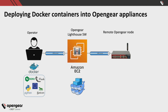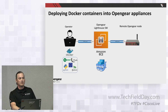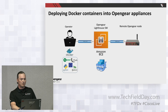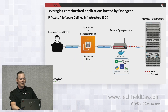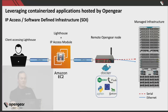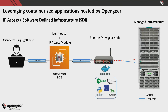We've done demos in the past showing how you can deploy apps from Lighthouse. Today I'm using our IP access solution that's part of Lighthouse to remote in. My Lighthouse is hosted on AWS, so I create a VPN tunnel to AWS into Lighthouse, which can then access the remote node actually in Florida. The app is hosted on an OM down in Florida, and for this demo I have a Cisco router and a Cisco switch hanging off of it.